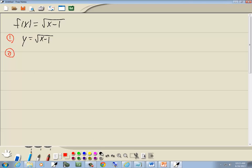Step two, interchange x and y. So we've got x is equal to the square root of y minus 1.